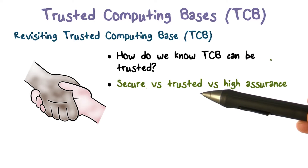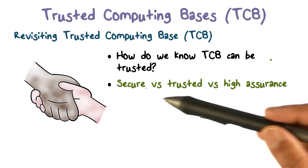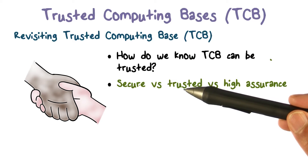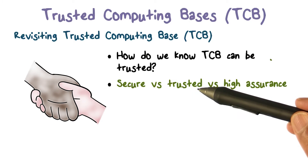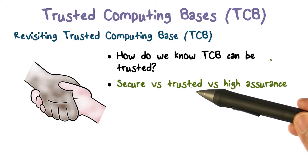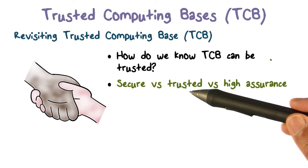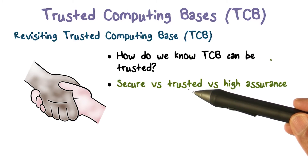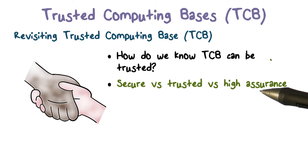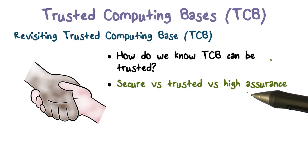Security can be thought of as a binary property — either something is secure or it's not secure when something can go wrong and violate the security requirements. Trusted typically means a high level of confidence that a system is going to do the right thing, what it is expected to do — its trustworthiness, our reliance on it. And high assurance is a similar idea: it does what it's supposed to do with a very high level of assurance.